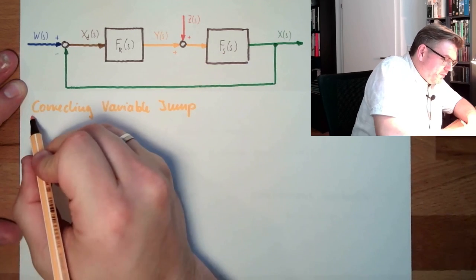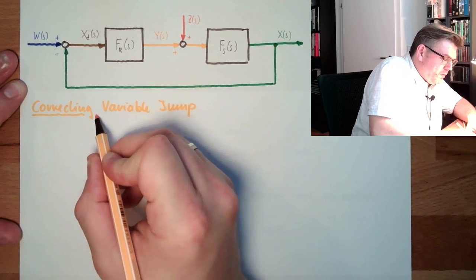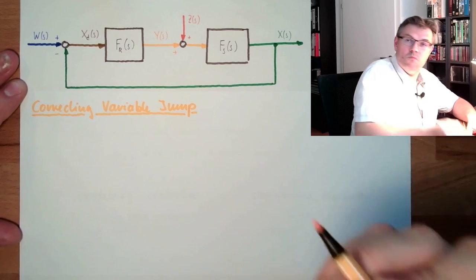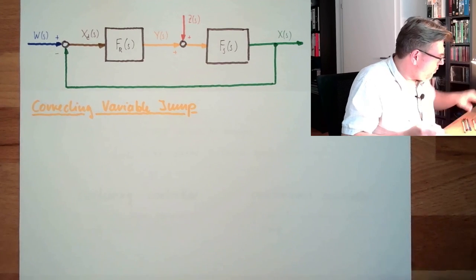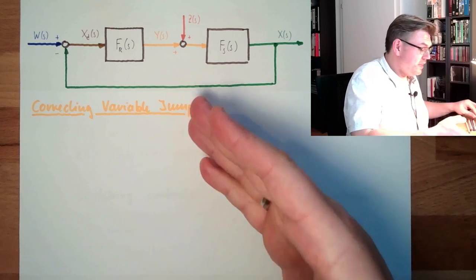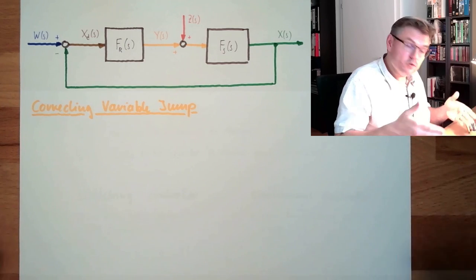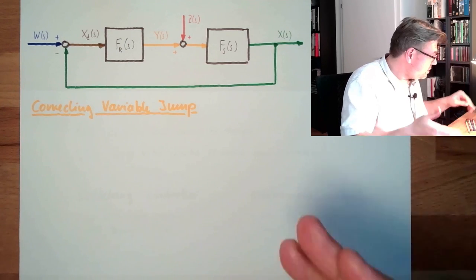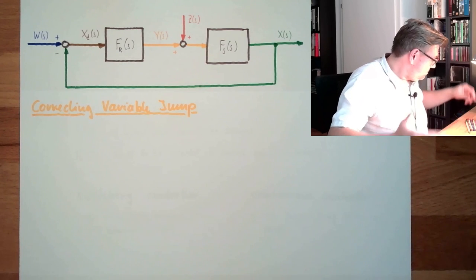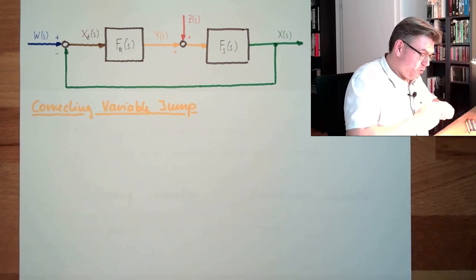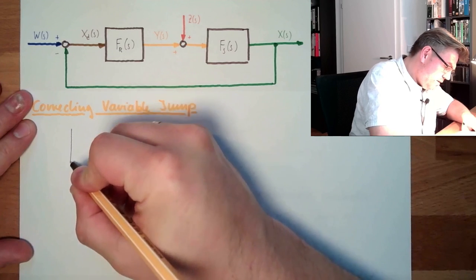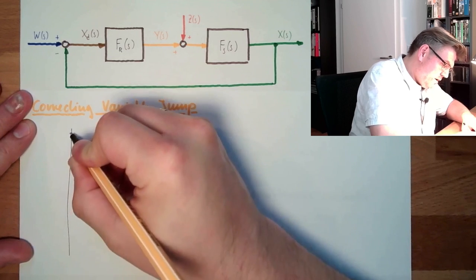We talked about this in measurement. We said: if we want to know how a measurement system is reacting, we do a test function. A step was one test function, and that is exactly what we are doing now. So how does this look?